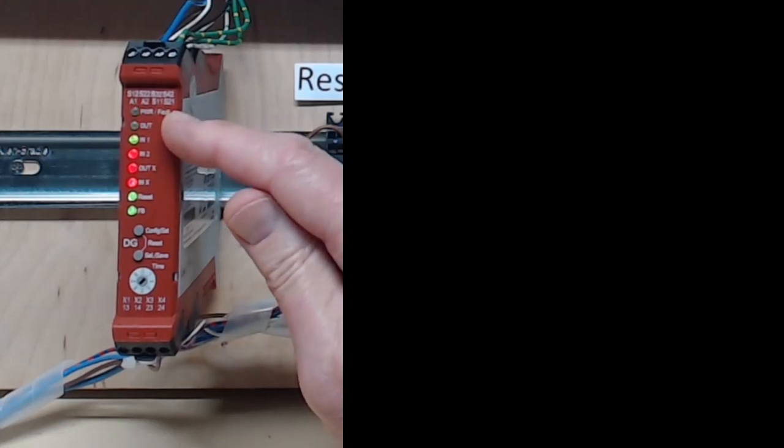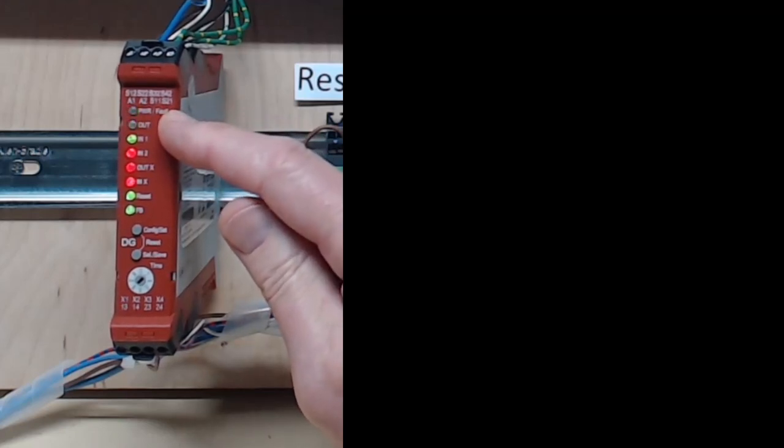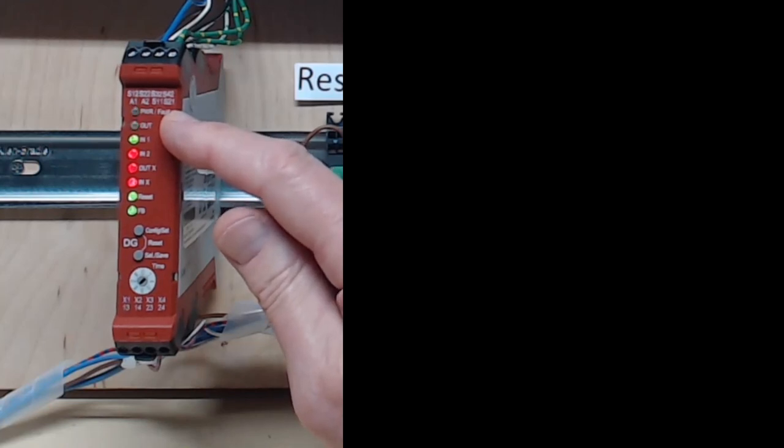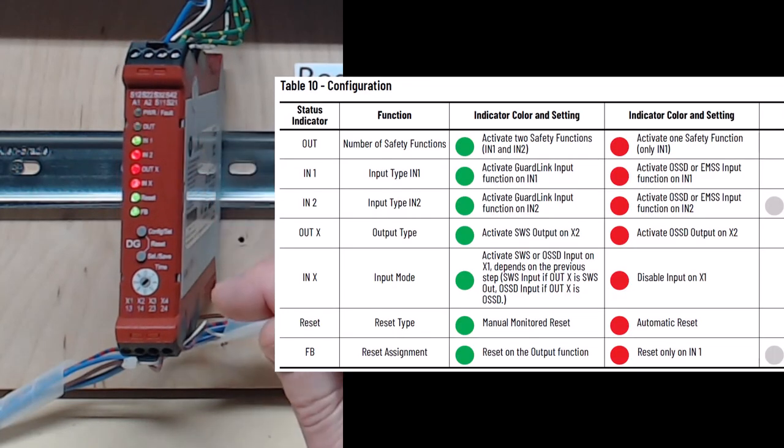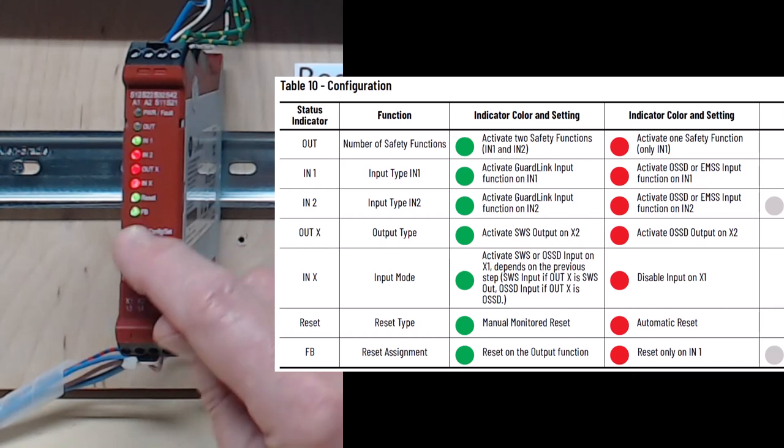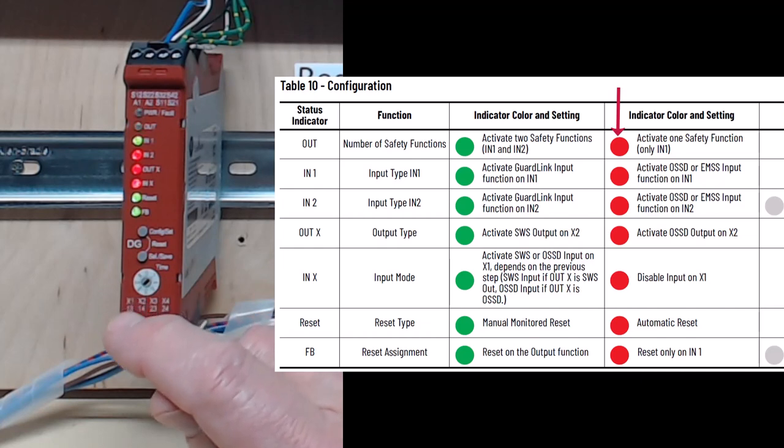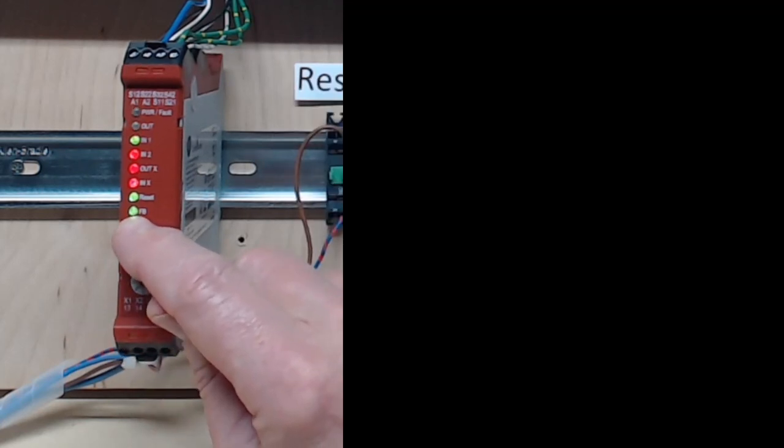You also see that the out LED is flashing green. The flashing indicates the feature that can be changed. Looking back at the configuration table, we see that the out LED will be green to activate two safety inputs, or you can press the config button to change it to red if you only wanted one safety input. Short press again to return it to green.